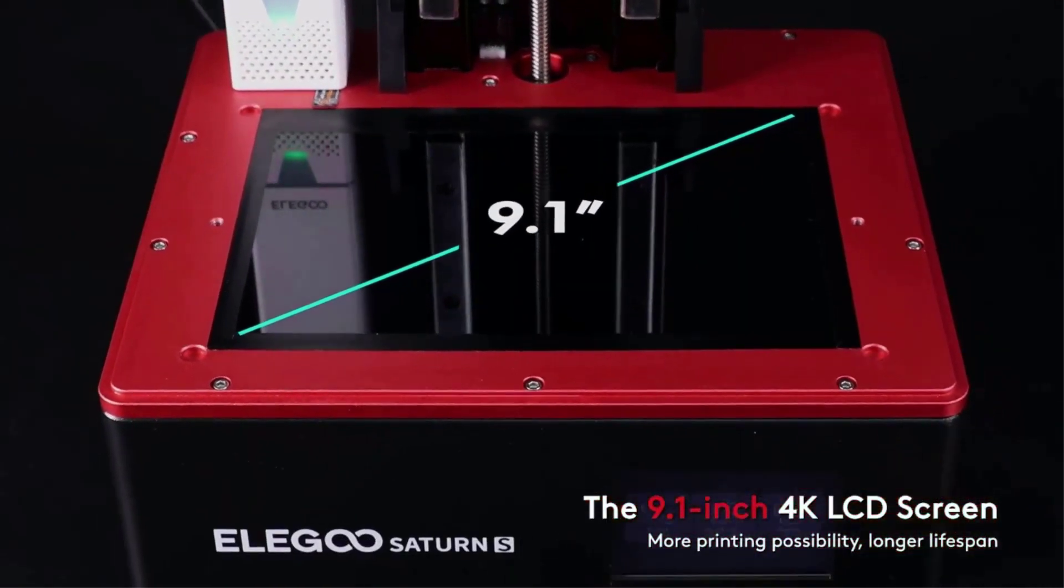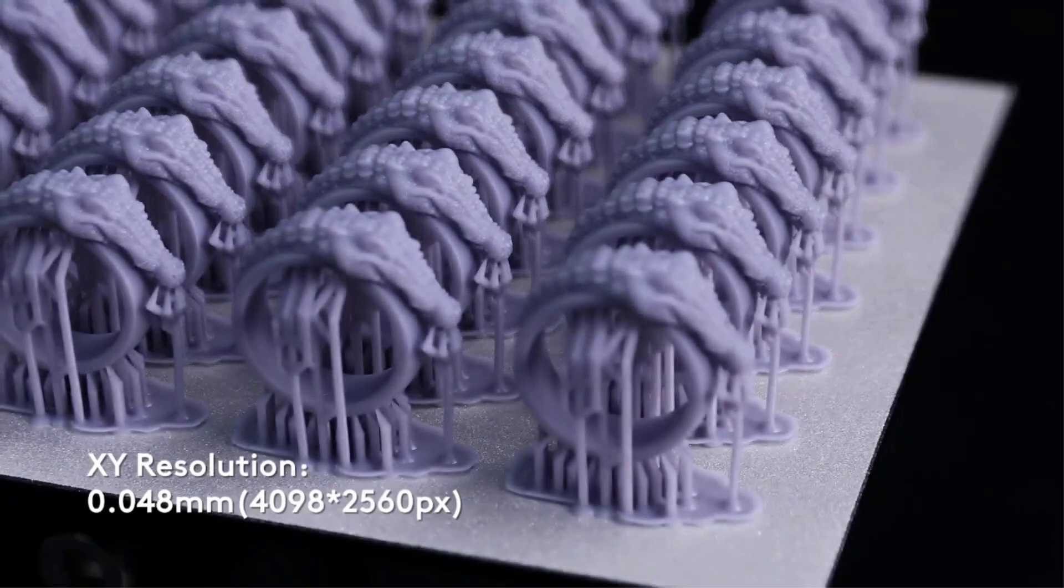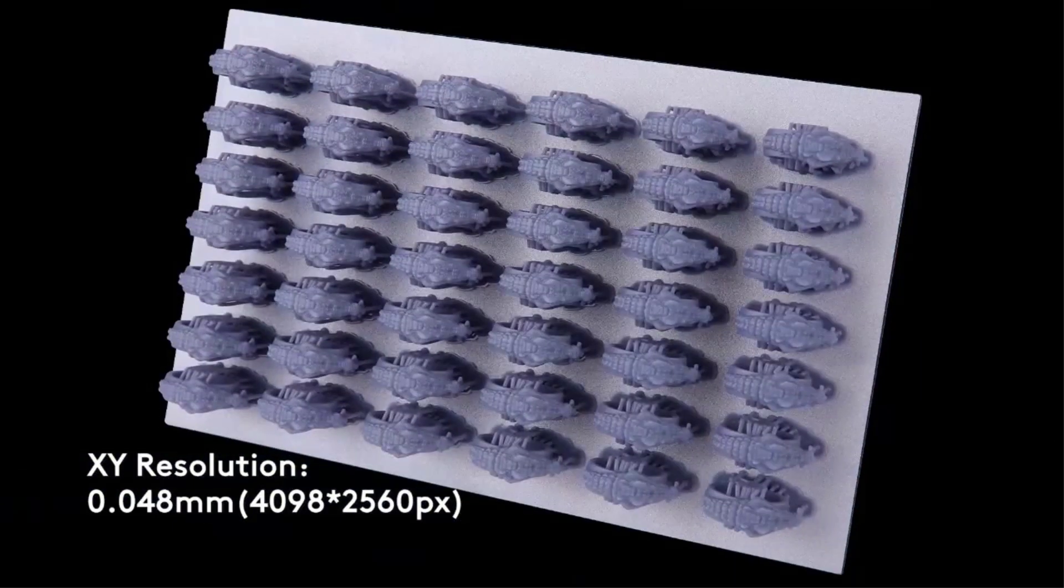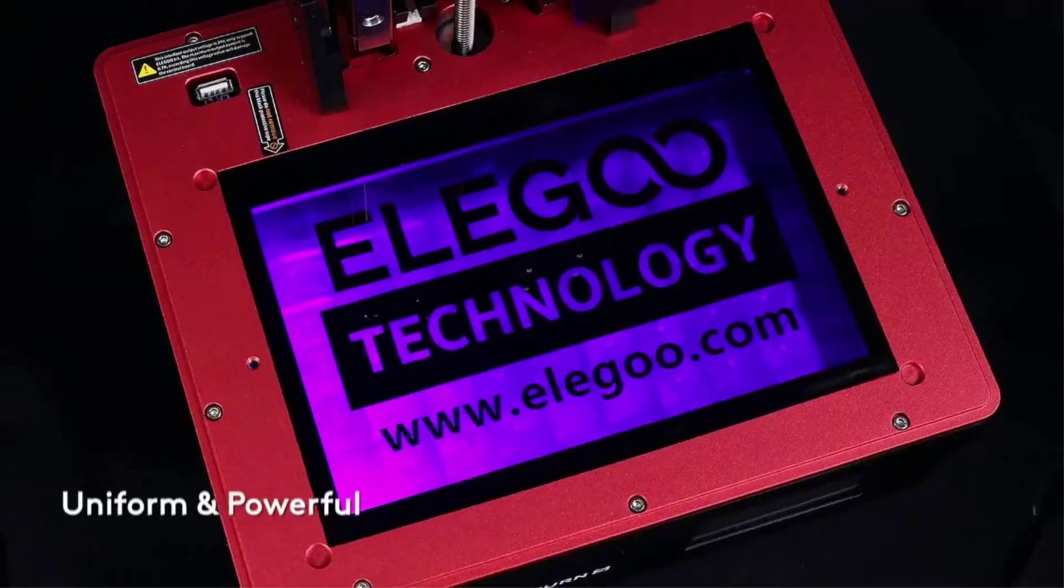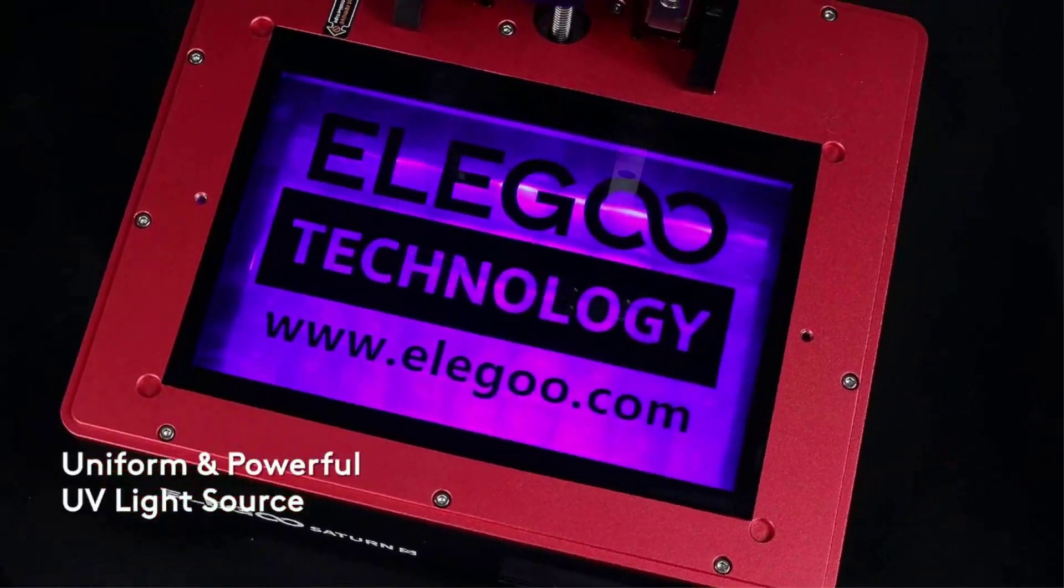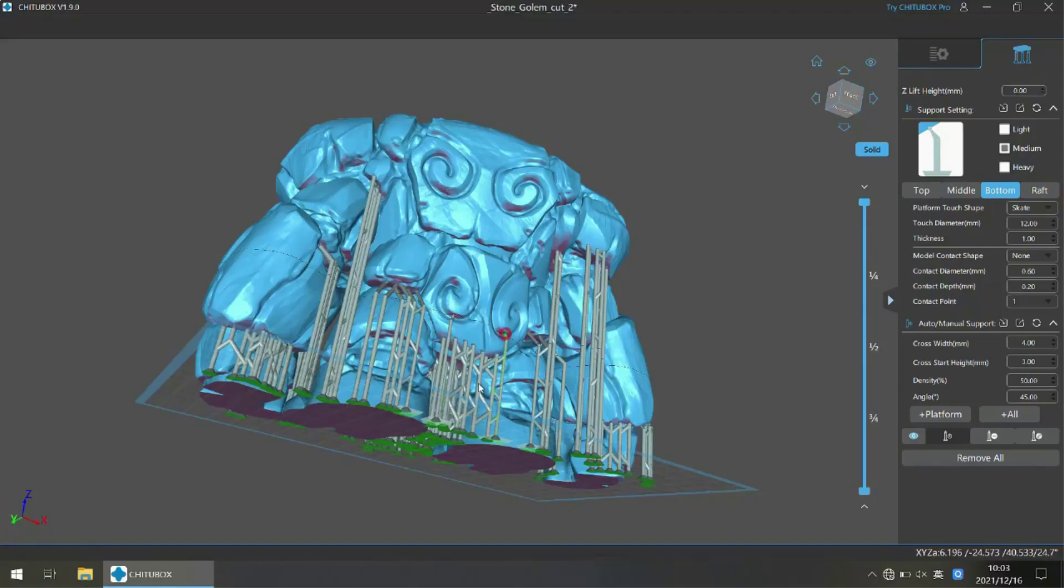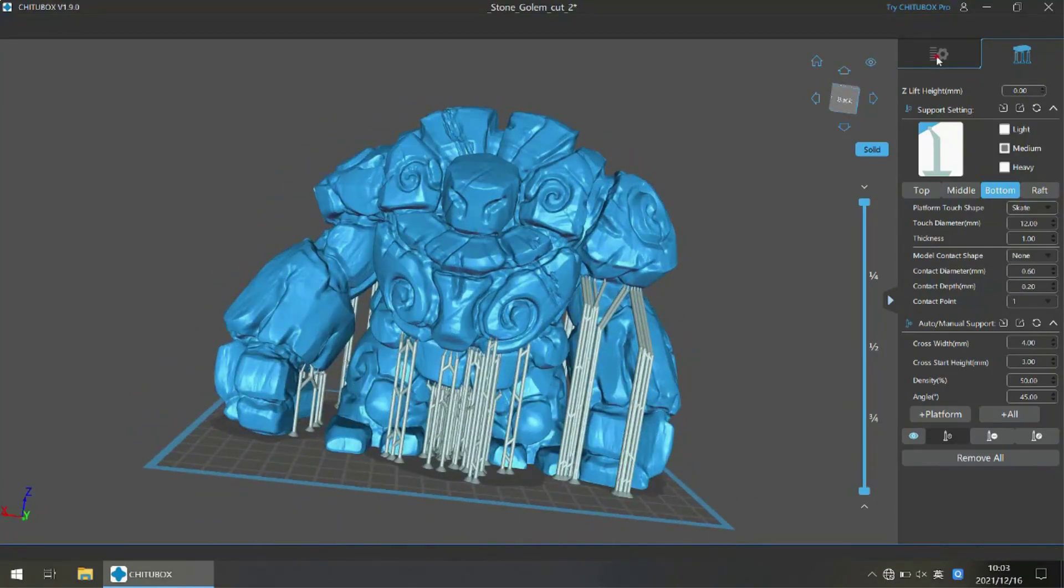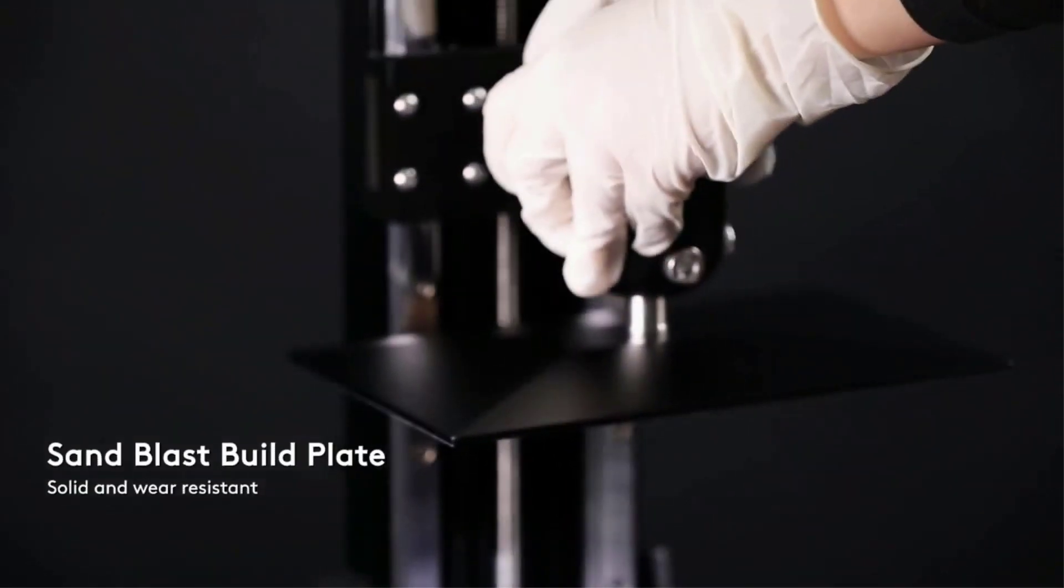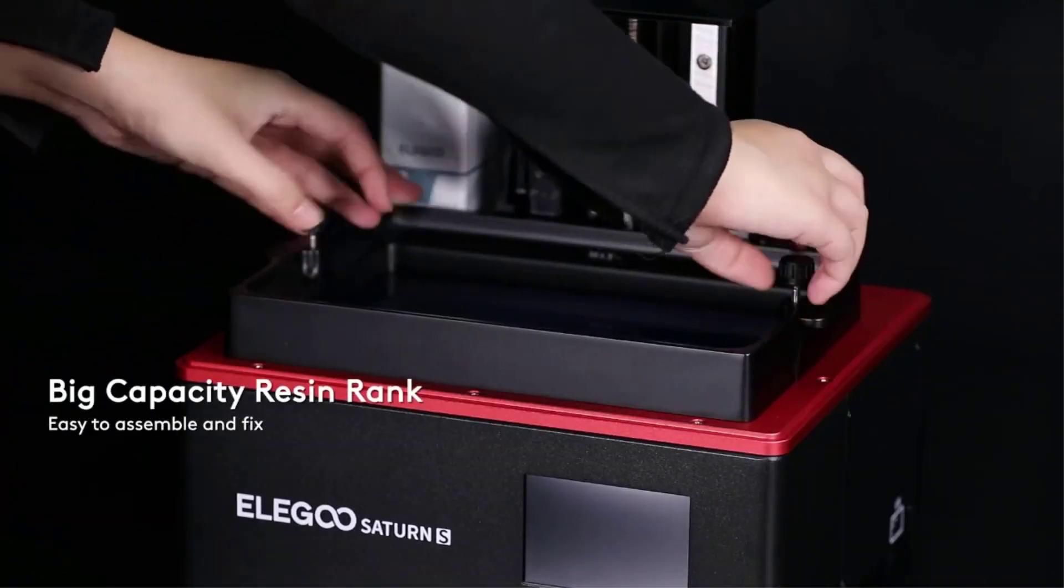The Saturn S features the new FEP film version 2.0, which increases the chances of print success due to its low release force. For stability, the printer has a double-linear guideway to provide a stable and sturdy printing experience and reduce the risk of layer shifting. The build surface has a sandblasted finish to ensure better paint adhesion and a long life.